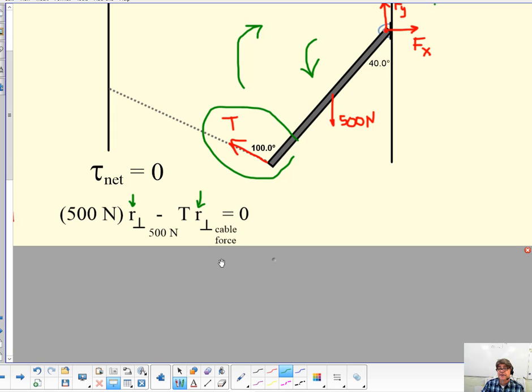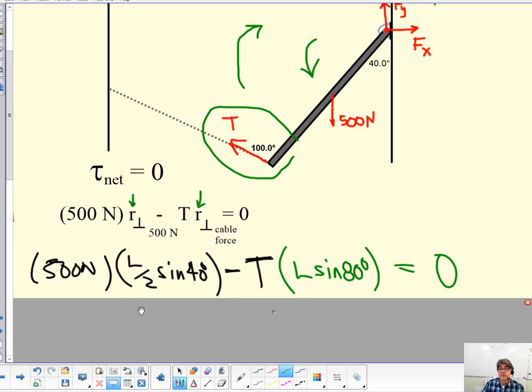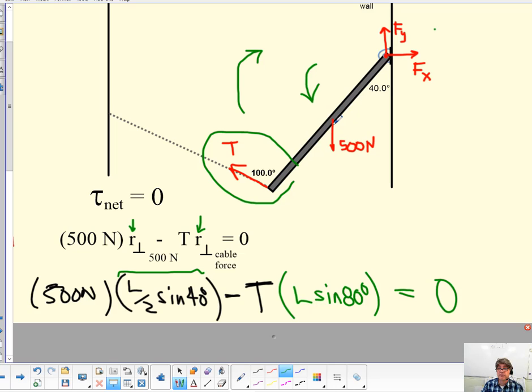So let's talk about the R perpendicular for the 500. I want to explain where this comes from. So it's not just like, here it is boys and girls, you're stuck figuring it out. No. Here's this force, right? The red 500 newton arrow down. Here's the point of reference. Now watch my pen. My pen goes from the origin to where the force is applied. That's the R vector. The R perpendicular is the part of that R vector that's perpendicular to the direction of the force.